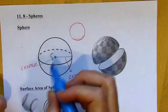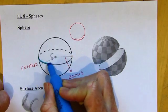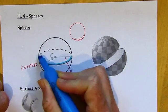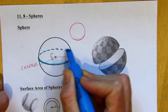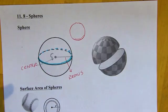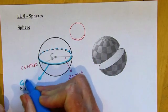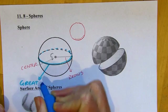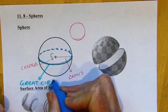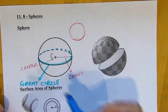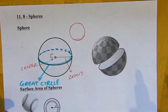If you were to cut this in half along this line that I've got here, this is called a great circle. And that just means it's a circle that's going to cut a sphere exactly in half.